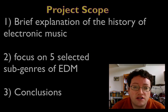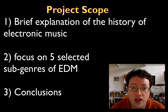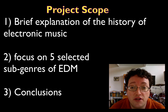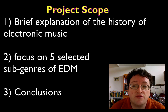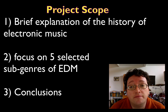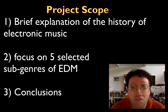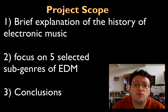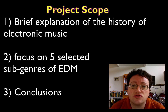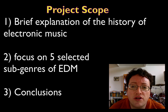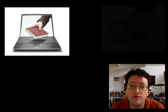The scope of this project is limited to the following topics: a brief explanation of the history of electronic music, a focus on five selected subgenres of EDM, and conclusions. The intended audience of the project is students enrolled in a college course.